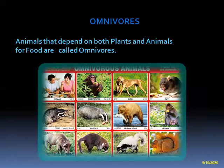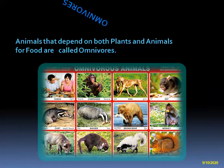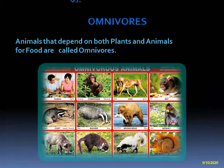Our next, the third one, is omnivores. Animals that depend on both plants and animals for their food are called omnivores. You can see human beings, chimpanzee, dog, rat, monkey, bear — these eat both plants and animals. These are omnivore animals.